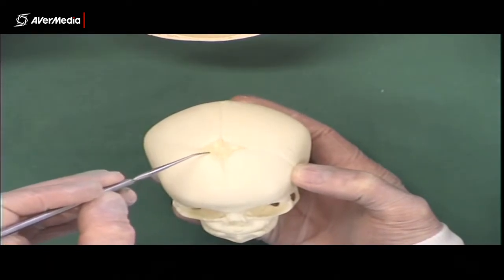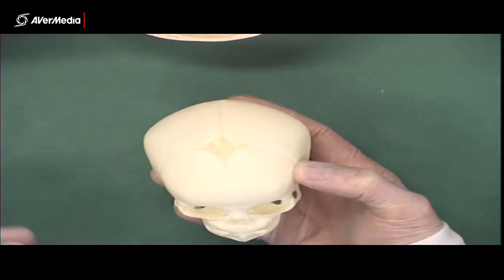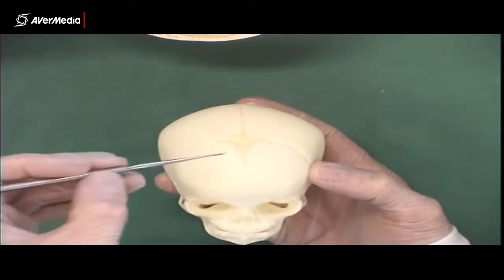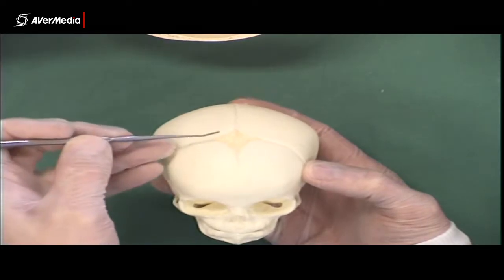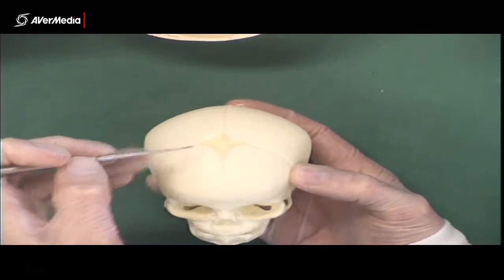In between we have an anterior fontanelle, so that's a place where there'll just be membrane, no bone there as yet until the bones finish growing together. So that would be the anterior fontanelle.